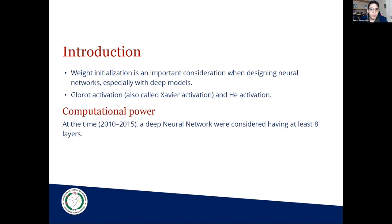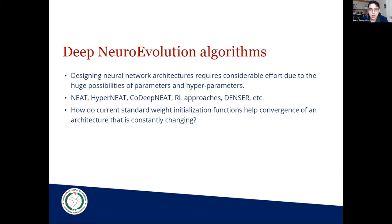Again, it's easy for us to talk about the size of layers when you have so much computational power today. At the same time, we have deep neural evolution algorithms — the bio-inspired techniques we can use to help select the best individuals, the best architectures, and help select other parameters and hyperparameters.